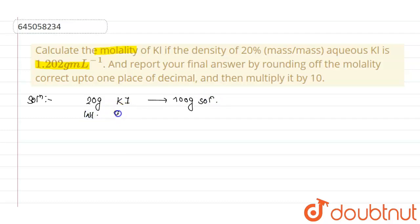Weight of KI will be 20 grams. This means molar mass of KI will be 39 plus 127, it comes out to be 166 gram per mol.